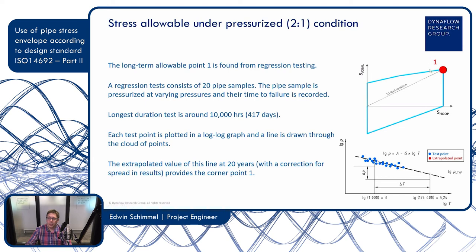For corner point one, we need to do the most elaborate testing — in reality, it is the pipe manufacturer who performs this testing. Corner point one is found by what is called regression testing. This stress envelope is for the design life of your pipe, which is normally 20 years. Because fiberglass has a different short-term strength and long-term strength — if you load it for a long duration the strength is lower; the short-term strength can be twice the long-term strength — we need to find the long-term strength. This is done by regression testing.